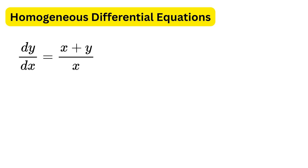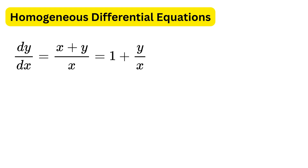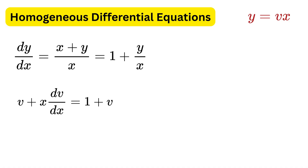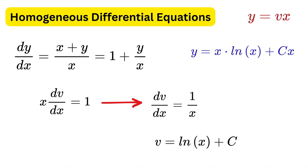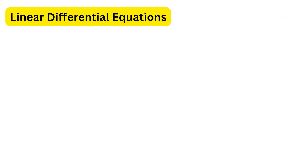For example, if dy/dx equals (x plus y) over x, which is nothing but 1 plus y/x, then set y equal to v times x. This gives v plus x times dv/dx equals 1 plus v. Cancel v from both sides, leaving x times dv/dx equals 1, so dv/dx equals 1/x, which integrates to v equals ln(x) plus c. Then use y equals vx to find y.